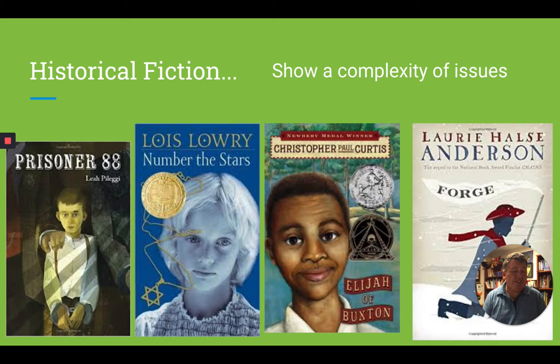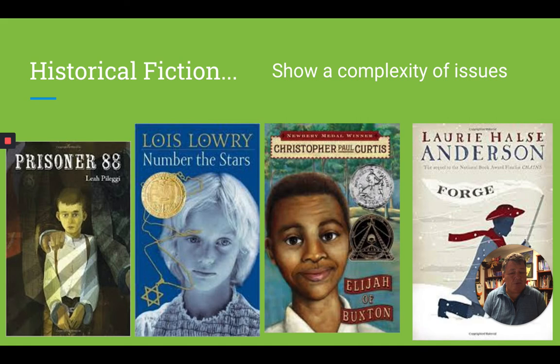Historical fiction can also present some really complex issues. Number the Stars, a common read in 4th, 5th, and 6th grade, is all about the Holocaust in World War II — a complex issue, but readable enough for those grades. Prisoner 88 is about a young boy in Idaho, based on a true story, who was imprisoned in the Idaho Penitentiary for shooting his father who was beating and abusing his mother. Forge is about slavery during the Revolutionary War. Complex issues throughout.